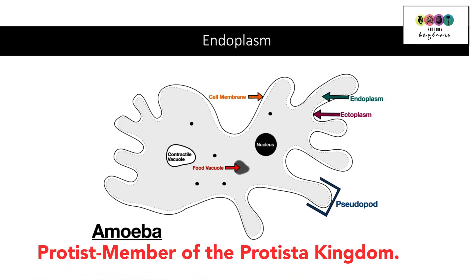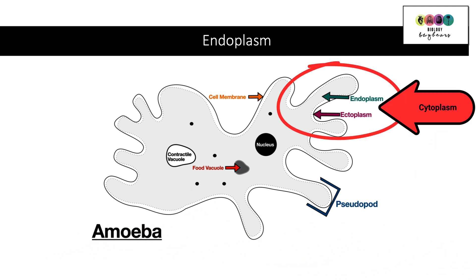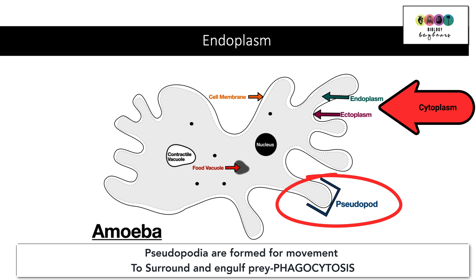The amoeba is a protist — a member of the protistic kingdom — and you should be able to draw and label its diagram; that's very important. When talking about endoplasm, you're looking at the cytoplasm of the amoeba, which has two parts: the endoplasm on the inside, which is watery, and a thicker gel-like layer towards the edges called the ectoplasm. It's the flow of the cytoplasm that helps the amoeba move by forming pseudopods or pseudopodia. Pseudopodia are also formed when the amoeba wants to surround and engulf its prey — a process called phagocytosis.